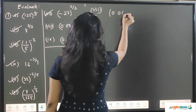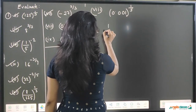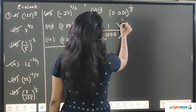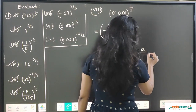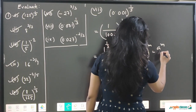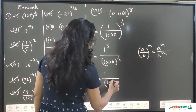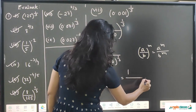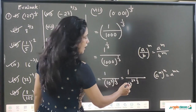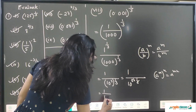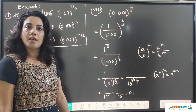Question 8 is 0.001 whole to the power 1/3. First remove the decimal: 0.001 = 1/1000, so we write (1/1000) to the power 1/3. Using a/b to the power m equals a to the power m upon b to the power m, this becomes 1^(1/3) upon 1000^(1/3), which is 1 upon (10³)^(1/3). Applying the property, the 3s cancel giving 1 upon 10¹ = 1/10 = 0.1. Since the question was given in decimal form, we leave the answer as 0.1.